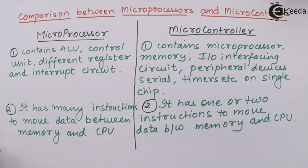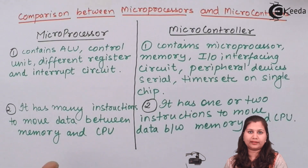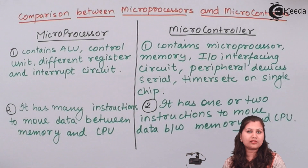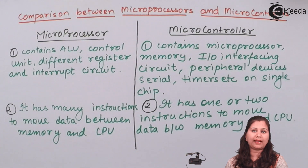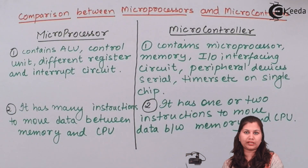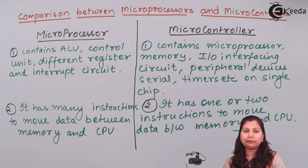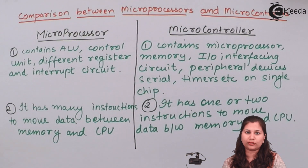The second difference is that in microprocessors, because memory is outside the chip, it has many instructions to move data between the memory and the central processing unit. But in microcontrollers, there are only one or two instructions for moving data between the memory and the central processing unit.